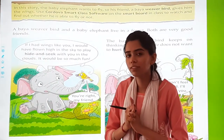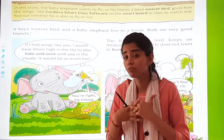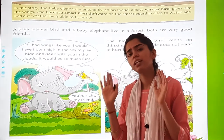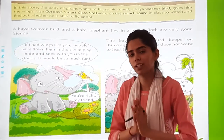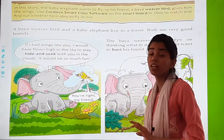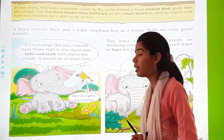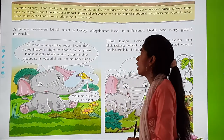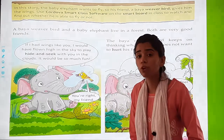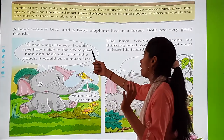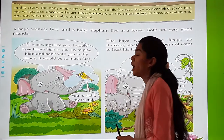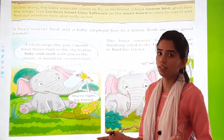So what is the elephant saying? That if he had wings, he would play hide and seek with the bird, high in the sky. You can see the elephant is not happy, so we have to say it accordingly: 'If I had wings like you, I would have flown high in the sky to play hide and seek with you in the clouds. It would have been so much fun.'